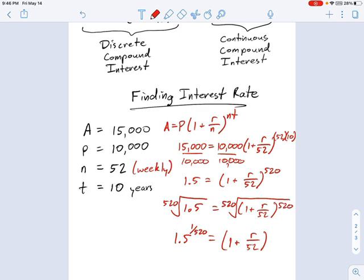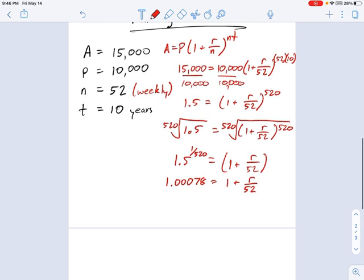I'm just going to punch that into my calculator here: 1.5 to the 1 divided by 520, and that equals 1.00078. And that's equal to 1 plus r/52. At this point, the calculation should be straightforward. I'm going to subtract 1 from each side, and I get 0.00078 = r/52.